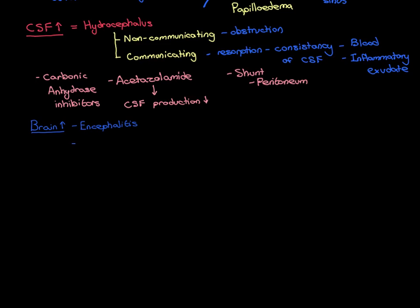Now let's discuss brain tumours. The first thing to say is a warning regarding the name. Brain tumours suggests these are tumours of brain cells, but that is not quite true. When we talk about brain tumours, we really use this term to mean tumours that are inside the skull — so really intracranial tumours — rather than actual tumours of nerve cells. Tumours of actual nerve cells are phenomenally rare.